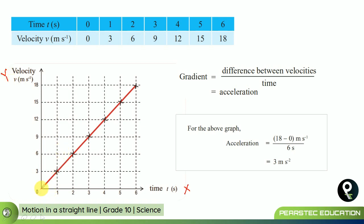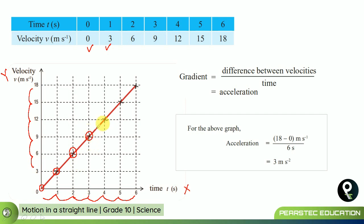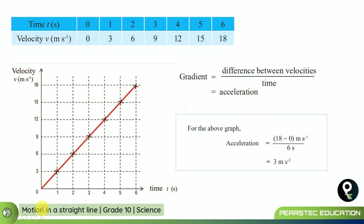When time is zero, velocity is zero. When time is one second, the velocity is three. They have plotted it dividing the y-axis into 3, 6, 9, 12, 15, 18 and the x-axis into 1, 2, 3, 4, 5, 6. When time is two, velocity is six; when three, velocity is nine; when four, velocity is twelve; when five, velocity is fifteen; and when six, velocity is eighteen.